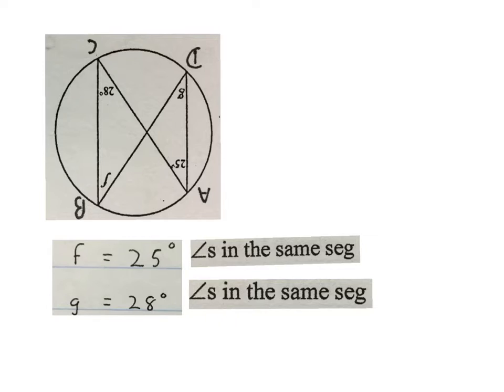Please stop the video and don't get afraid. Then I wrote G equals to 28 degrees, also angles in the same segment. So that 28 is the same as that G. That angle and that angle are angles in the same segment. You are allowed to turn things around.